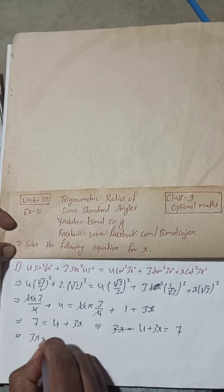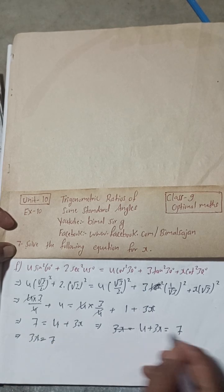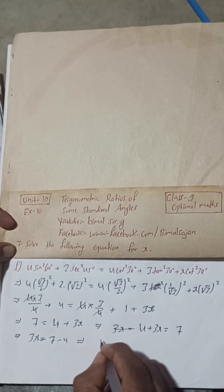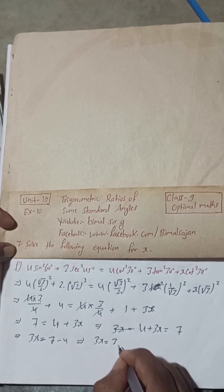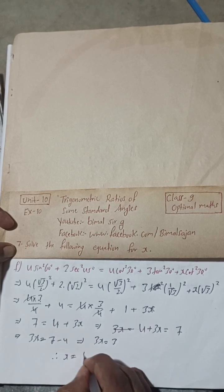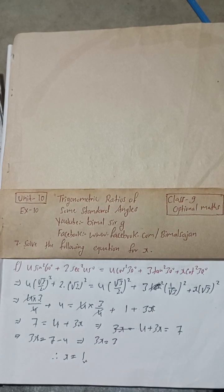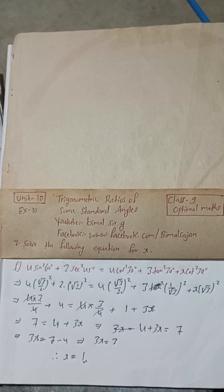This implies 3x equals 7 minus 4 is 3. Therefore, x equals 3 divided by 3 is 1. So this is the required solution of 7F.